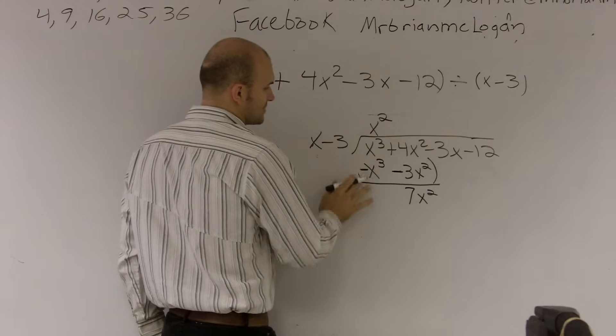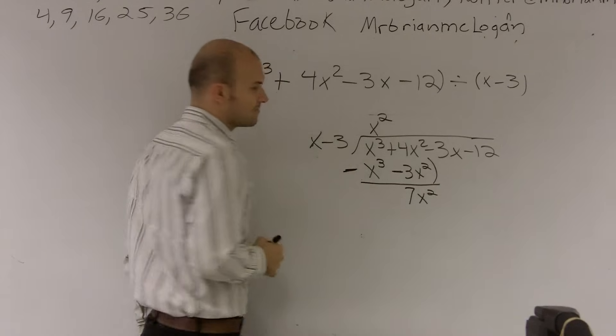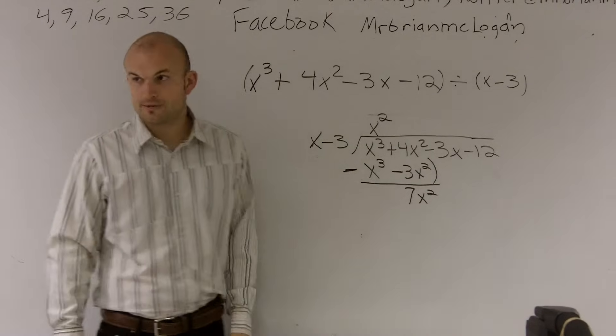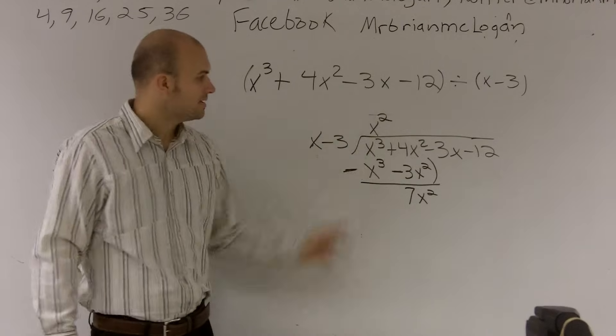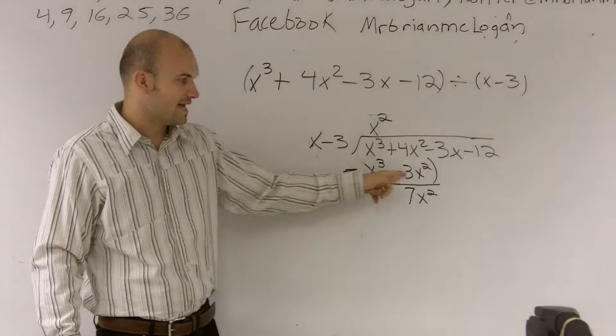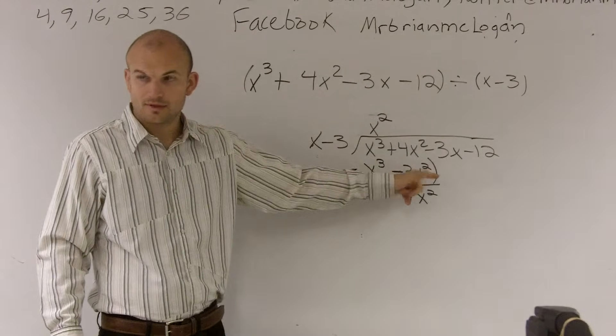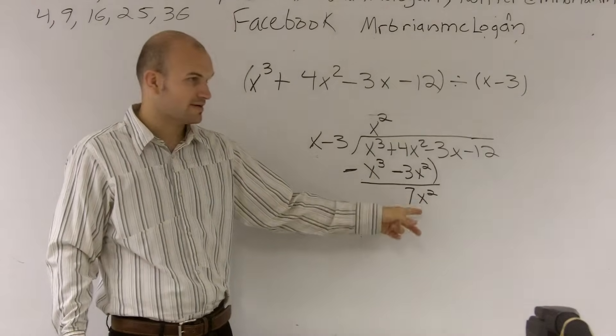Does that make sense? All right, you're subtracting the whole line, right? That's a negative 3x squared, right? x squared times negative 3x. 4x squared minus a negative 3x squared. Double negative makes it a what? Positive. Positive. So that's where I get a 7x squared.